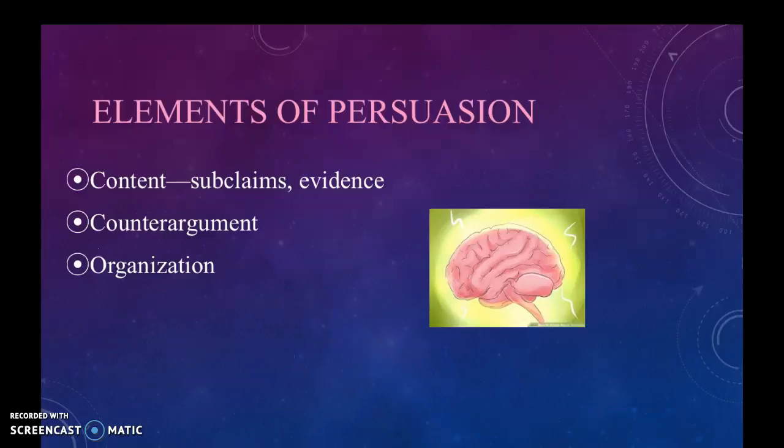More elements of persuasion: within your content, you'll always have subclaims. Your assertion states what you want changed, and your subclaims are your main supporting ideas. For example, if your assertion is that the death penalty should be abolished, a subclaim could be that it's morally wrong, and another could be that many innocent people end up on death row.